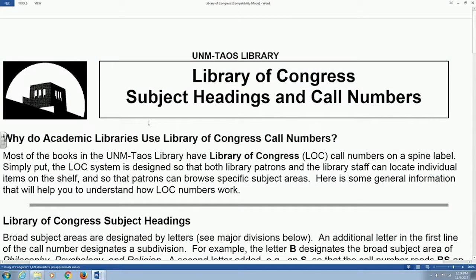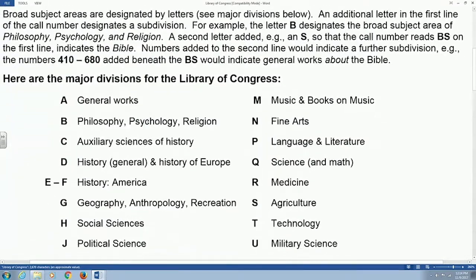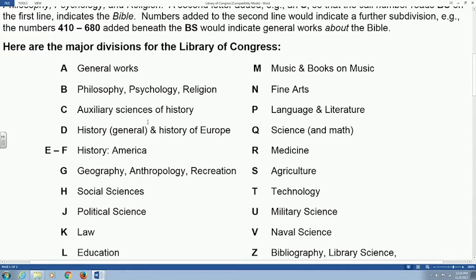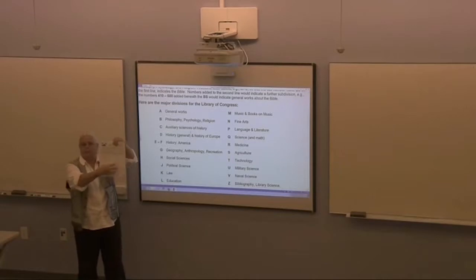Dewey Decimal is what we use in school K–12 and in public libraries. But when you go to a college or university library, the materials are arranged by Library of Congress subject headings. I don't expect you to memorize all these subject headings, but just get a sense of how it works and what order they're in. It feels alphabetical — when you go to the library and look at the shelves, you'll see it starts with A. It is alphabetical, but alphabetical by subject headings, not by the author's last name. It's alphabetical by these subjects, and this is a very broad breakdown.